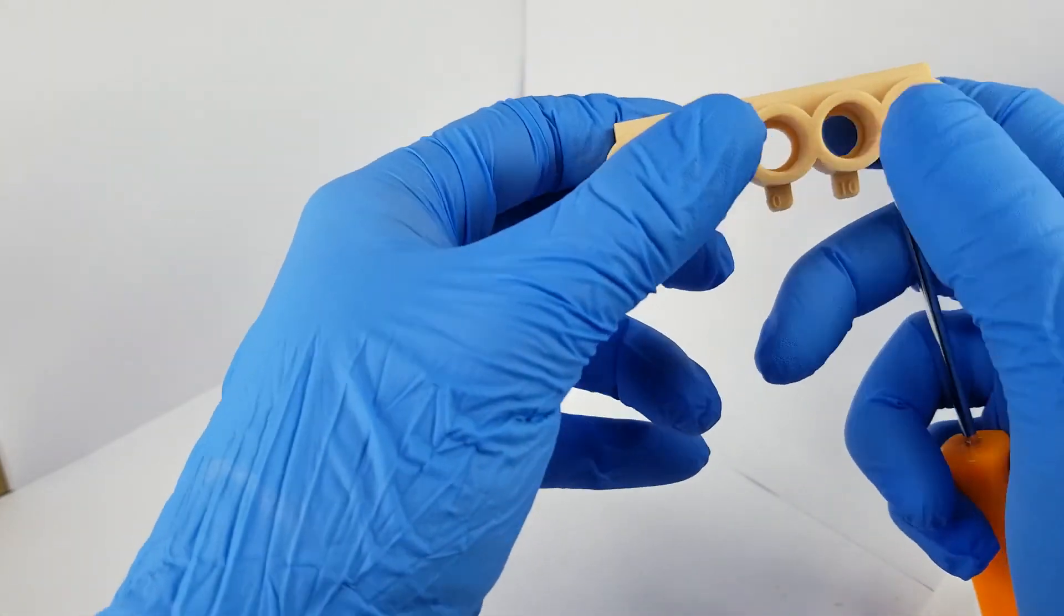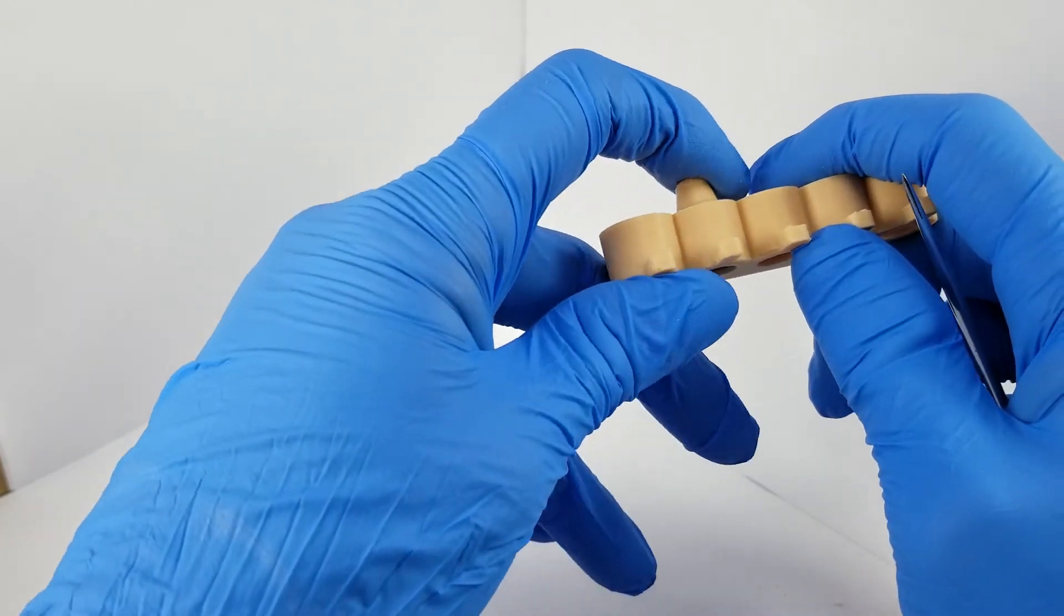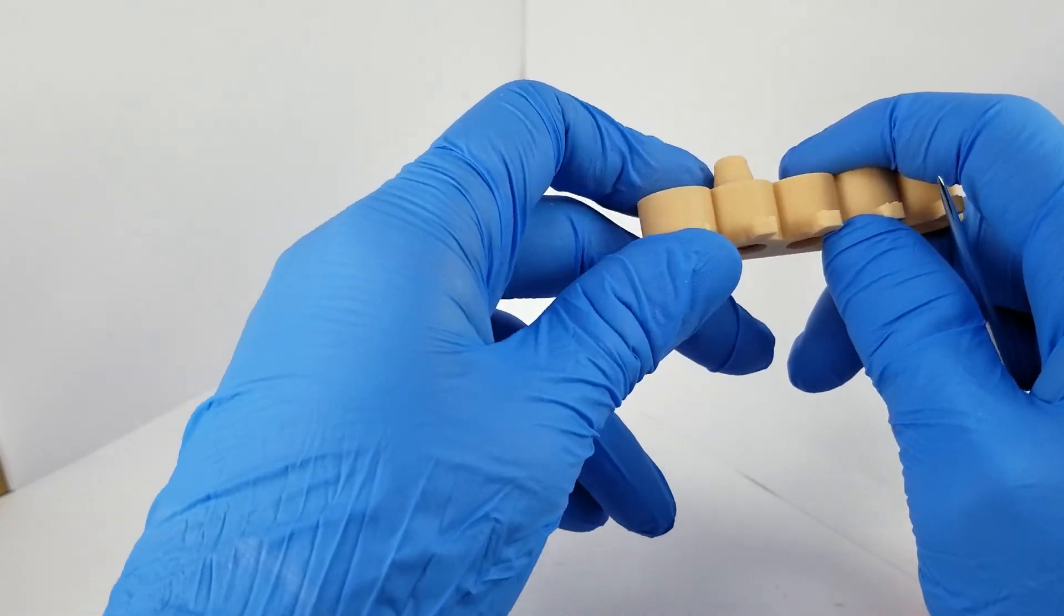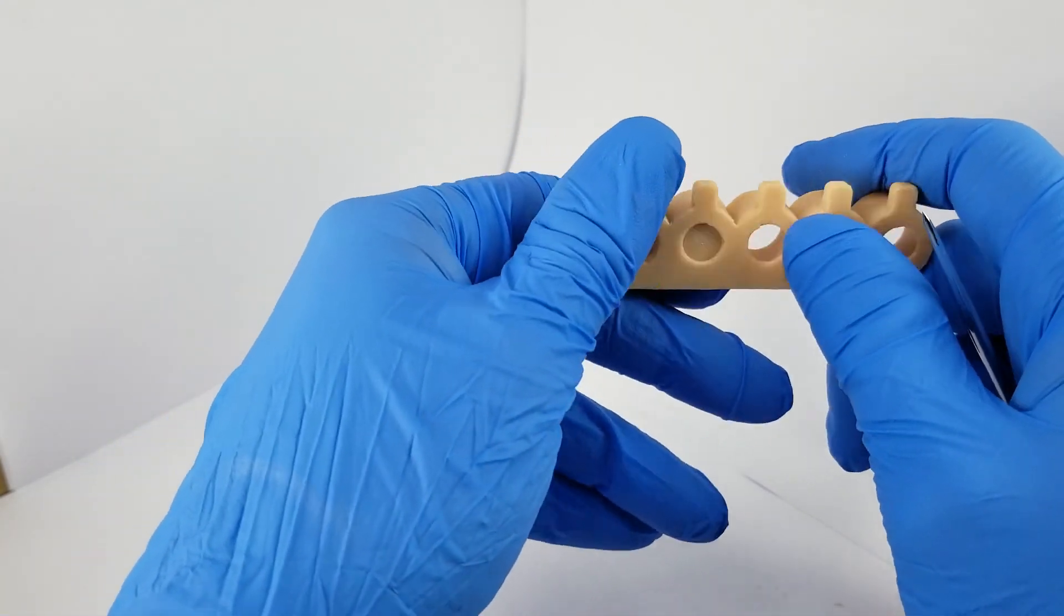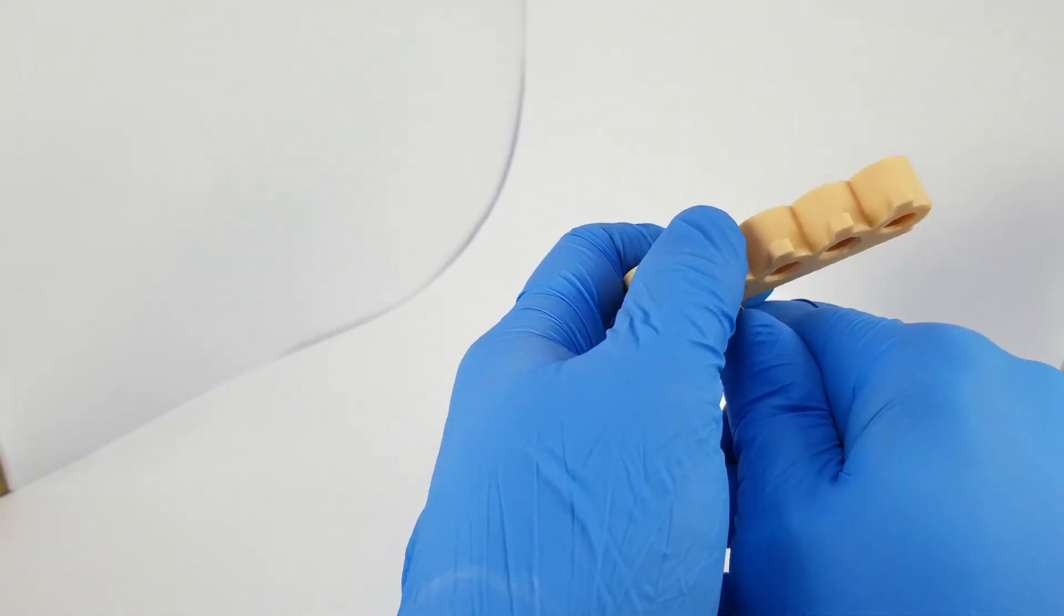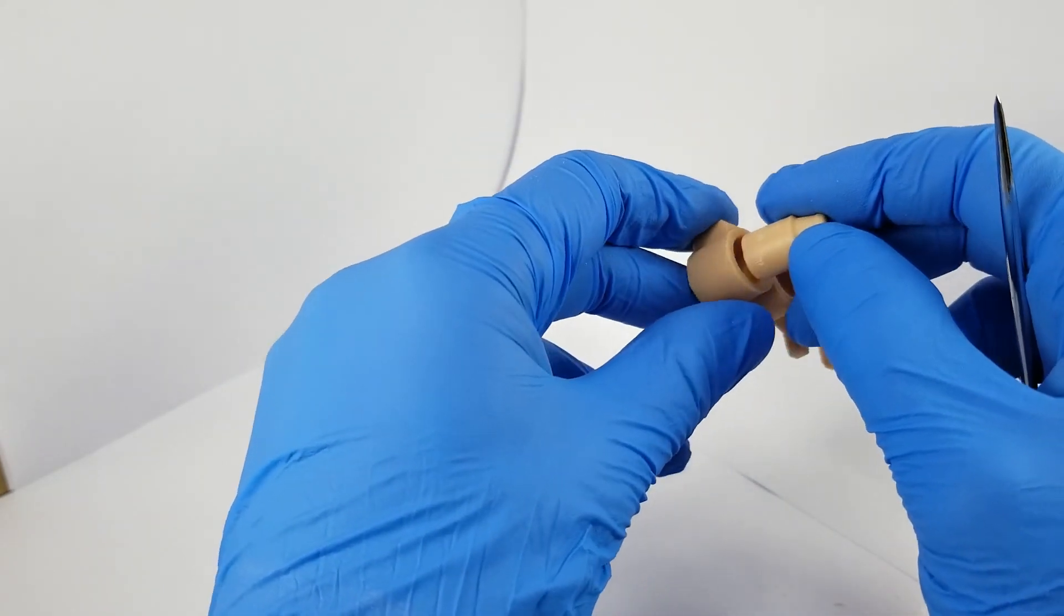So let's see if I can get into the negative 10 micron offset here. And that snapped in. That is not going anywhere. There's no rotation, no movement. It feels to me like this is the setting that I want to go with. And it's still, you can get it out. It's not a problem to remove.